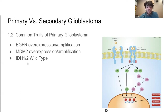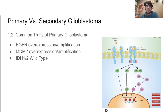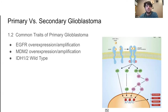MDM2 overexpression and amplification is also very common to primary glioblastomas. MDM2 is a protein that binds to the well-known P53 tumor suppressor protein — the guardian of the genome — and inhibits its activity. Under normal conditions, P53 aids in DNA repair or cell apoptosis, but when MDM2 binds to it, it induces a conformational change and renders P53 useless. Importantly, primary glioblastomas express the IDH1 and IDH2 wild type, not the mutated version.